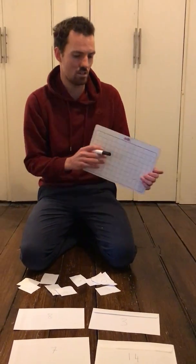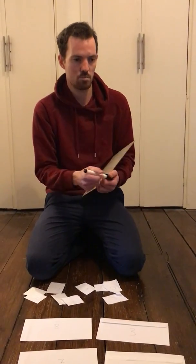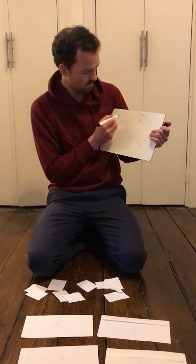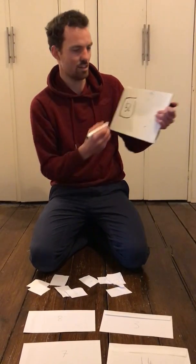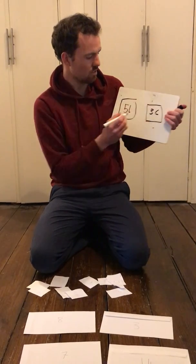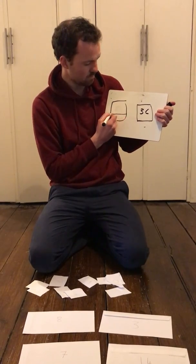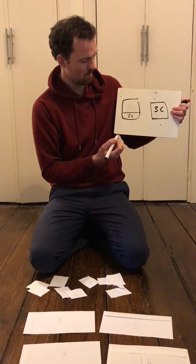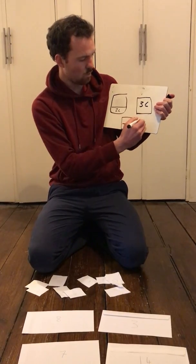By the way, if you did do yesterday's problem, which was the liquids problem, if you emptied the 5 litre jug into the 3 litre jug, you would have been left with 2 litres, which you could then have put into your 4 litre jug.